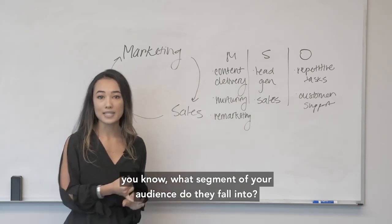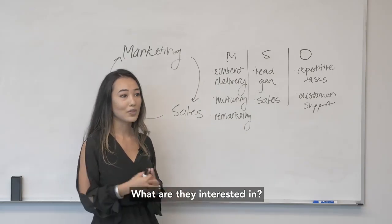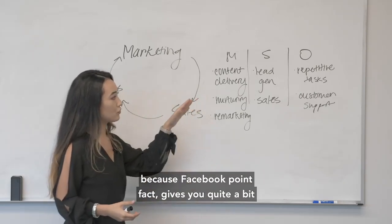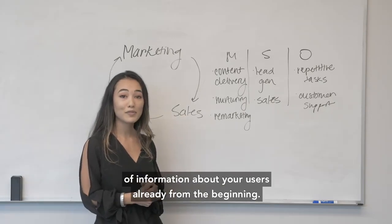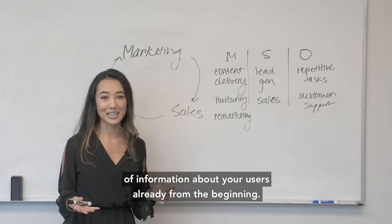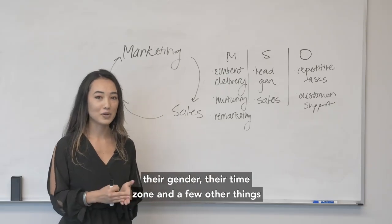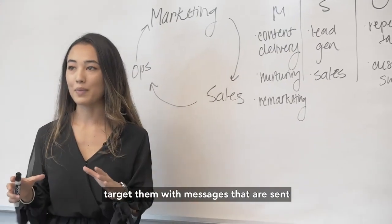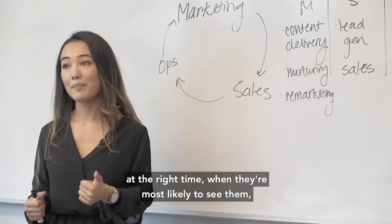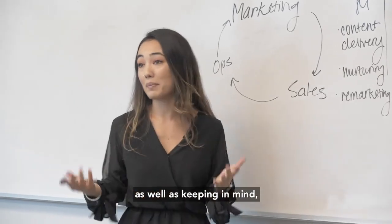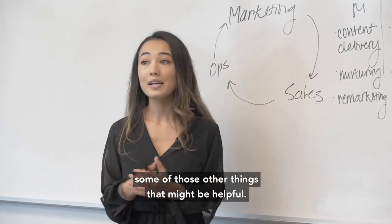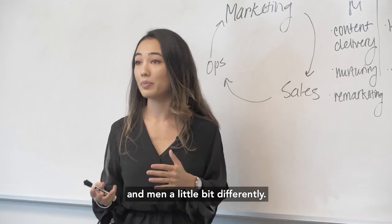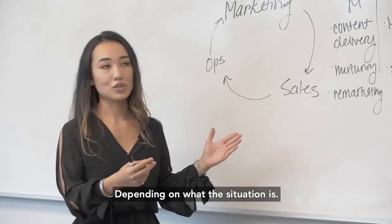That can be things like what segment of your audience they fall into, what they're interested in, what their preferences are. Really getting some unique information from them, because Facebook — fun fact — gives you quite a bit of information about your users already from the beginning: their first name, last name, gender, time zone, and a few other things that can be really useful to help you target them with messages sent at the right time when they're most likely to see them. For example, if this is a product more geared towards women, you might address women and men a little differently depending on the situation.